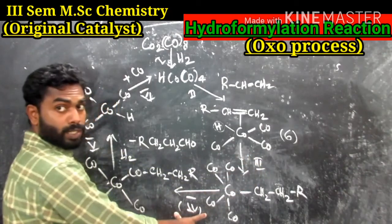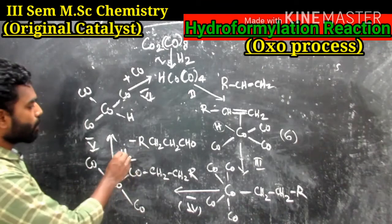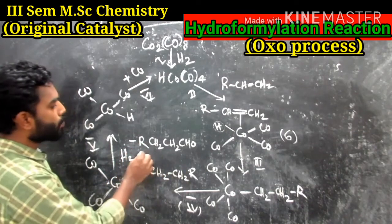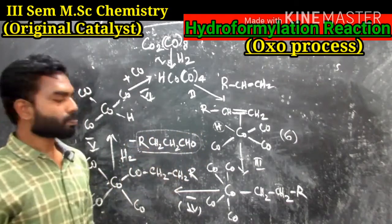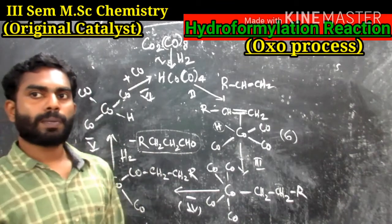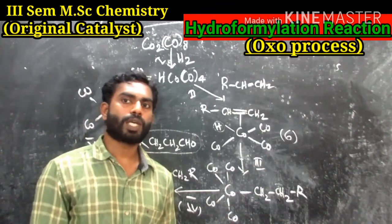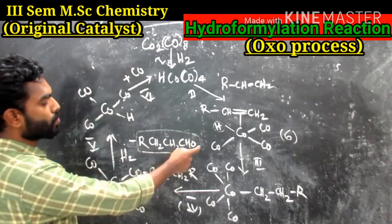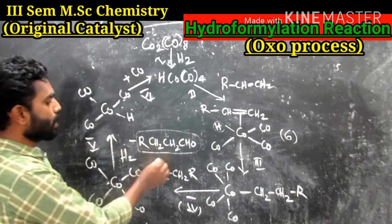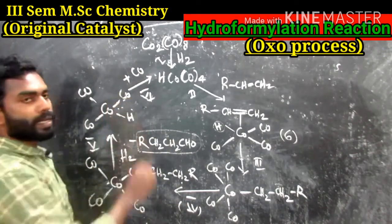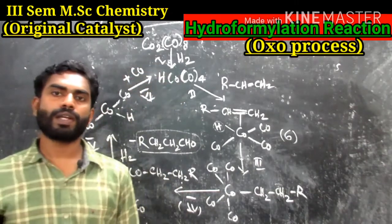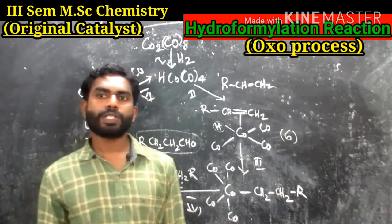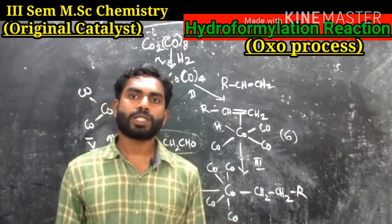Following the CO insertion step, step 5 is the reaction of gaseous hydrogen with the acyl complex to yield the aldehyde and regenerate HCo(CO)₃. Step 6 is the rapid absorption of CO molecules by HCo(CO)₃ to regenerate the active catalyst HCo(CO)₄, which restarts the whole catalytic cycle.